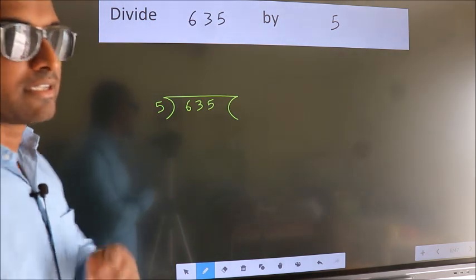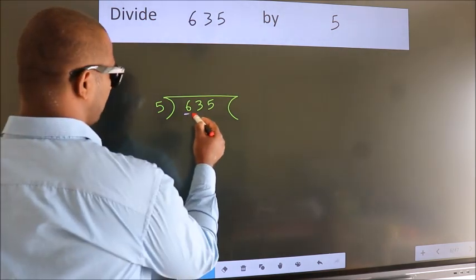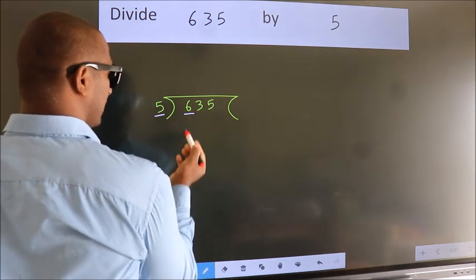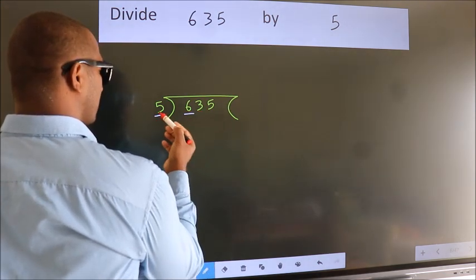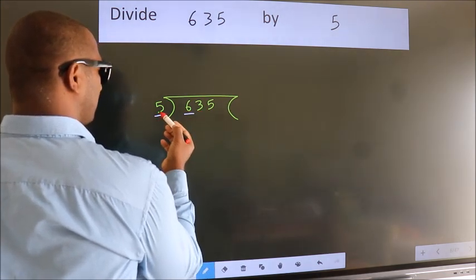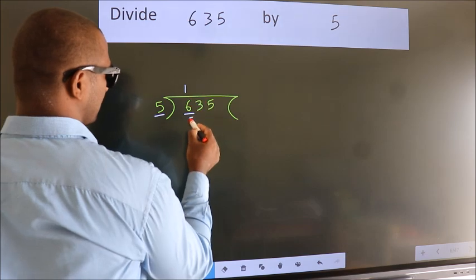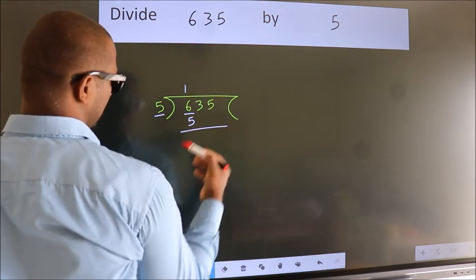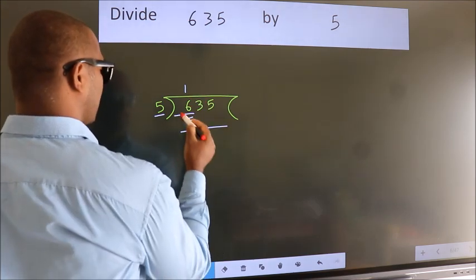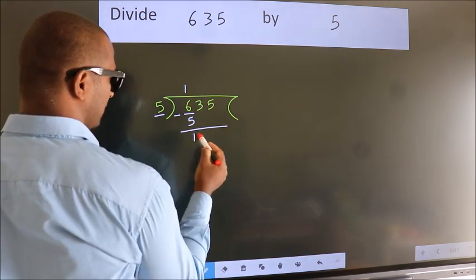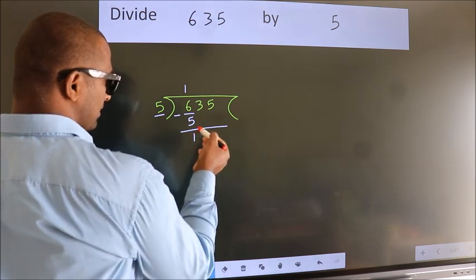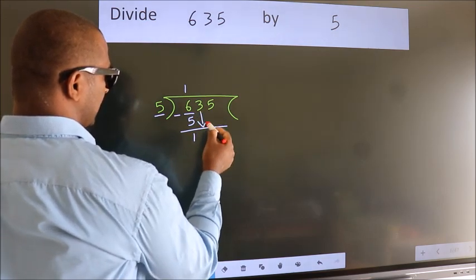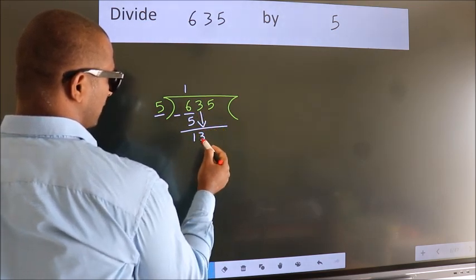Next, here we have 6, here 5. A number close to 6 in the 5 table is 5 once, which is 5. Now we should subtract — we get 1. After this, bring down the beside number. So, 3 comes down, giving us 13.